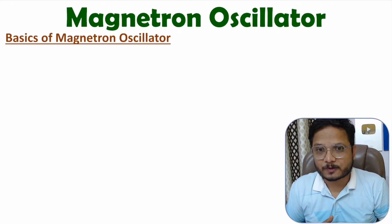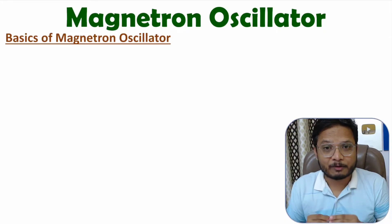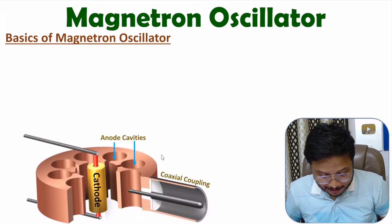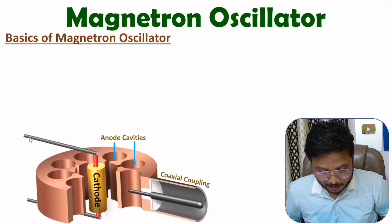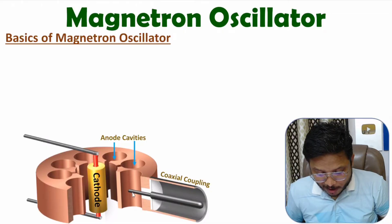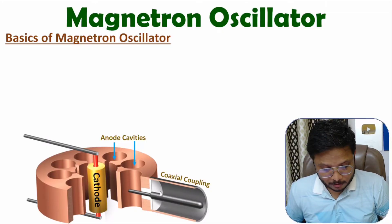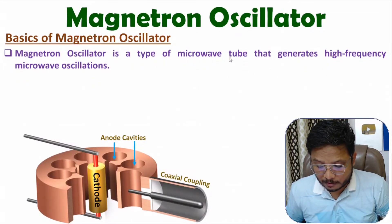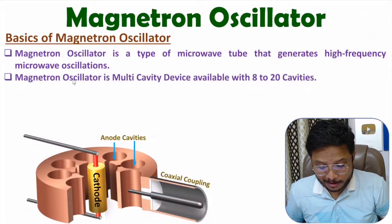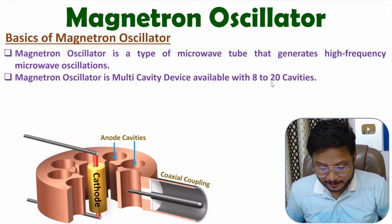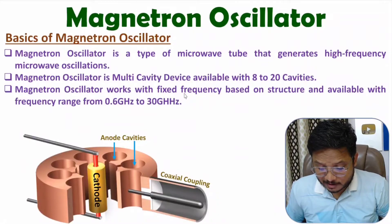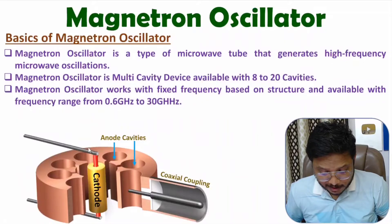Magnetron oscillator is a microwave source — using it one can generate microwave signals. In its basic structure we have a cathode connected to a filament with a DC supply, an anode, and anode cavities. From the anode cavities, by using a waveguide or coaxial coupling, we can take RF output. This microwave tube generates high-frequency microwave oscillations and is available with 8 to 20 cavities.